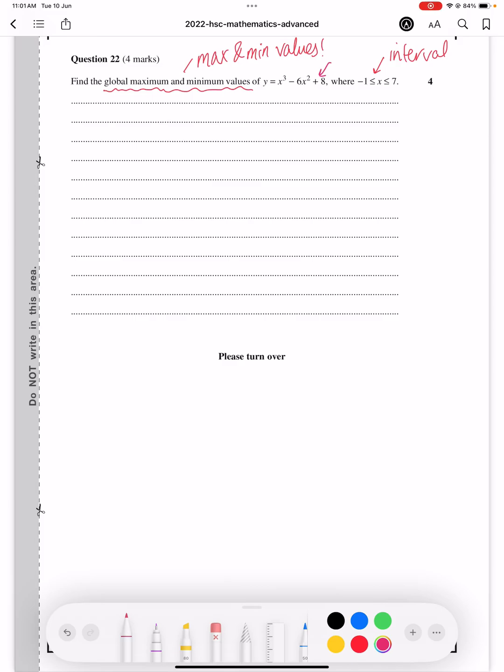This question asks us to find the global maximum and minimum y values of a function given a certain interval. Let's go ahead and find our stationary points first up.